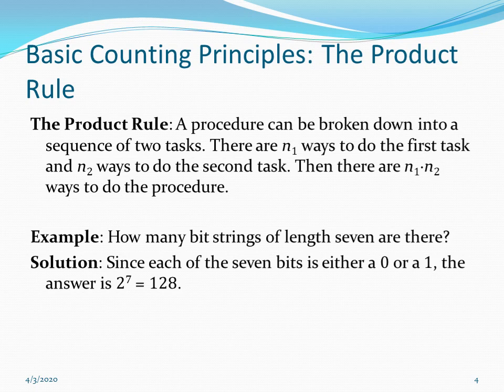Here is an example to explain the product rule. We want to know how many bit strings of length 7 there are. A bit string is a sequence of numbers that uses only two digits, either 0 or 1. Since there are seven slots to fill and each has only two choices — either 0 or 1 — we multiply 2 by itself seven times, giving us 2 to the 7, or 128.